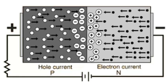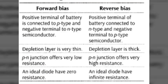Current then flows in the circuit — this is called forward current. The key points to note are: first, the potential barrier is reduced and at some forward voltage it is eliminated altogether; second, the junction offers low resistance to flow; third, the magnitude of current depends upon the applied forward voltage.